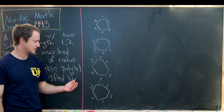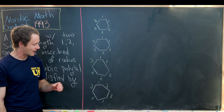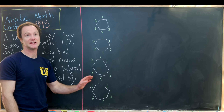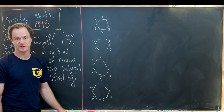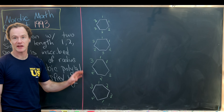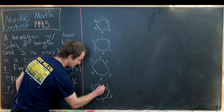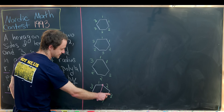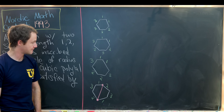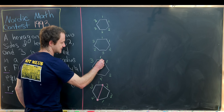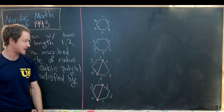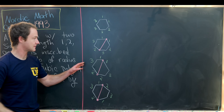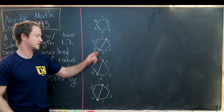The most important observation is that all of these configurations allow us to draw a diagonal from opposite vertices of the hexagon that splits it into two congruent quadrilaterals. Those quadrilaterals will have side lengths one, two, three, and the shared diagonal. For example, connecting vertex A to vertex D gives a quadrilateral on each side, each with side lengths one, two, three, and the diagonal.